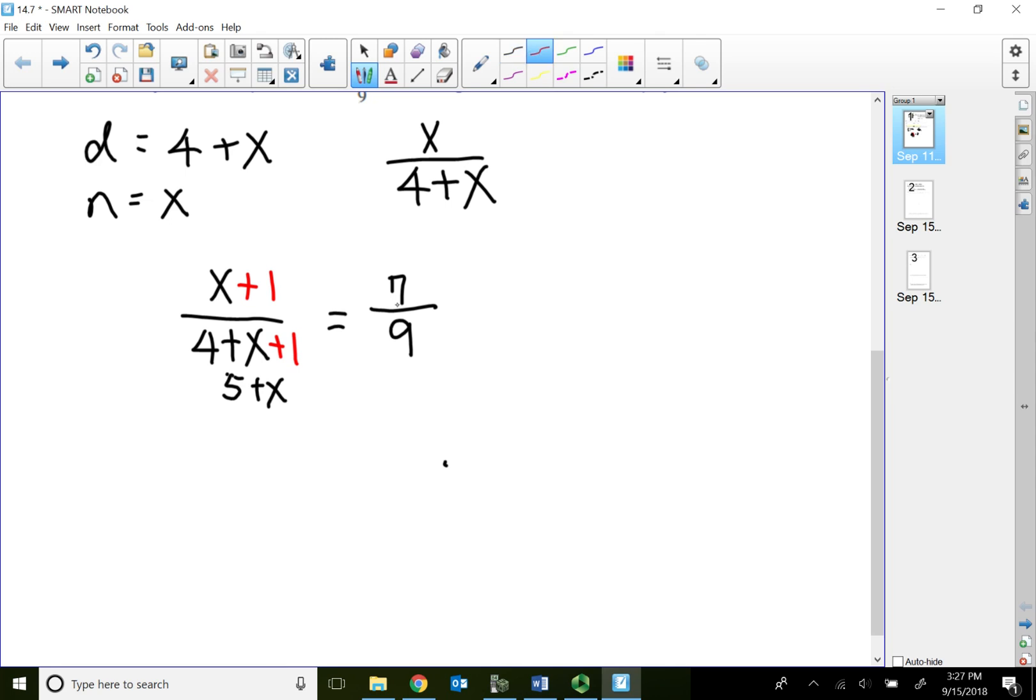So let's do a cross product real quick. Nine times x plus one, set it equal to seven times five plus x. Two terms, put them in the parentheses representing one denominator.